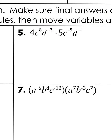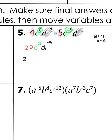For number 5, we have multiplication again. We have 4c to the eighth power, d to the negative third power, times 5c to the negative fifth power, d to the negative first power. We multiply our numbers: 4 times 5 makes 20. Then add our exponents with the same base c: 8 plus negative 5 is 3, so that turns into c cubed. For d: negative 3 plus negative 1 is negative 4, so I have d to the negative fourth. Move that into the denominator and it becomes positive. Your answer is 20c cubed all over d to the fourth power.